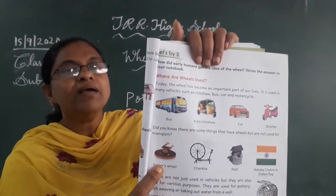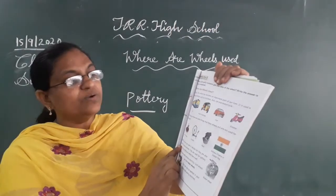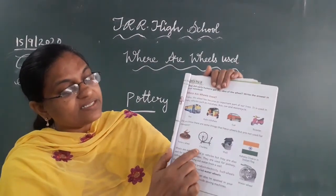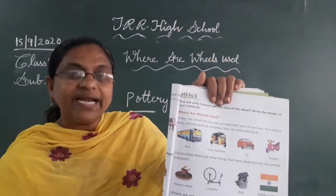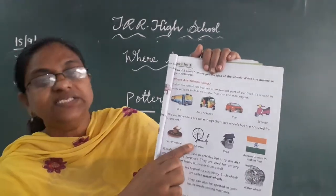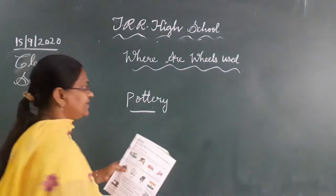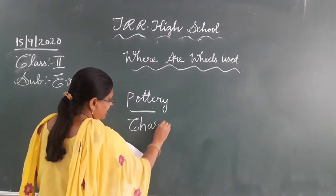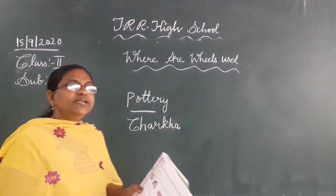For making the vessels, we should use the wheel. Do you know where else we use the wheel? This is called Charkha. With a Charkha, we make thread from cotton. These are new words for you — you should learn them. Charkha — C-H-A-R-K-H-A.